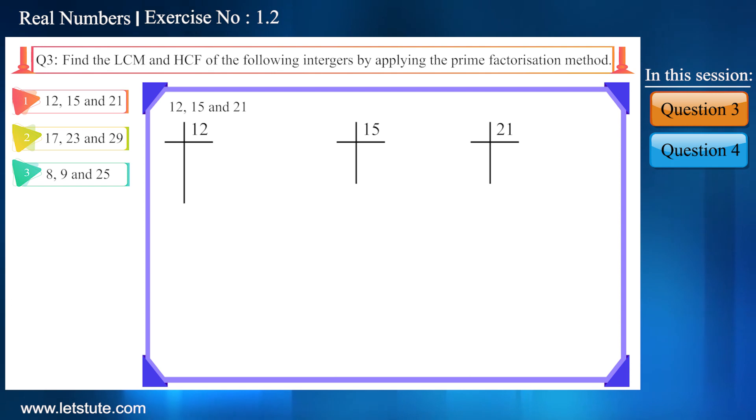First let's write these three as follows. Now friends, 12 will be divided by 2. 2 into 6 is 12, here it will come 6. 2 into 3 is 6, here it will come 3. Again 3 into 1 is 3. So we can write 12 as 2 into 2 into 3.